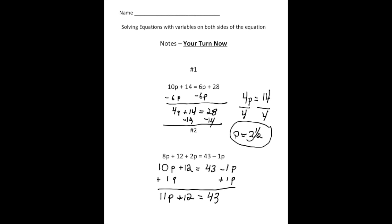And now it's solving a two-step equation. So I'm going to take away 12 from both sides. So we get 11P equals 31. And then I have to divide both sides by 11. So when I do that, let's see, 31 divided by 11 is going to be two with nine left over. So it'll be two and nine elevenths.